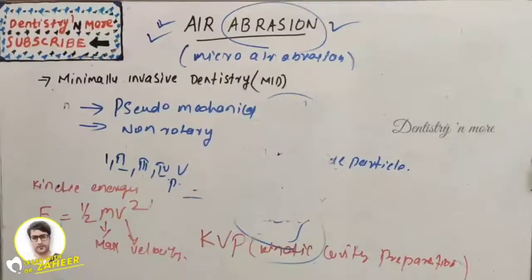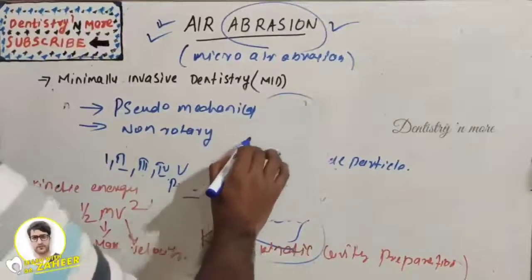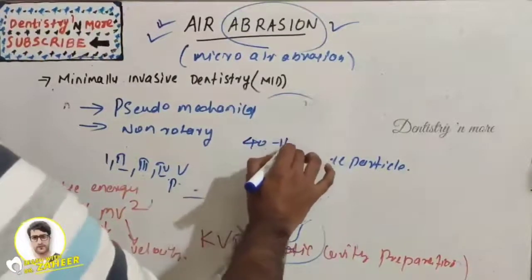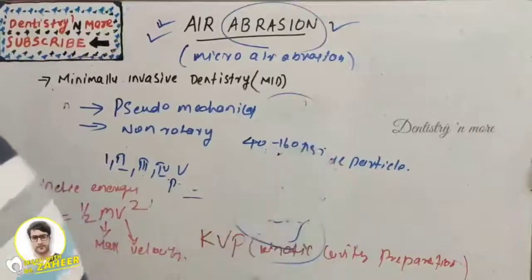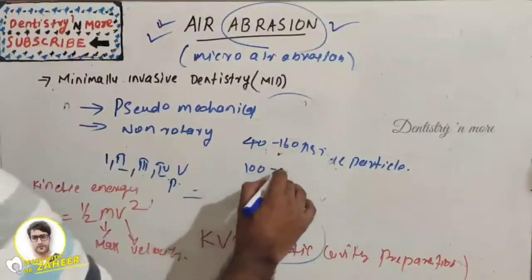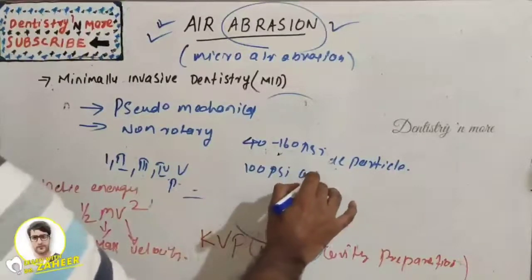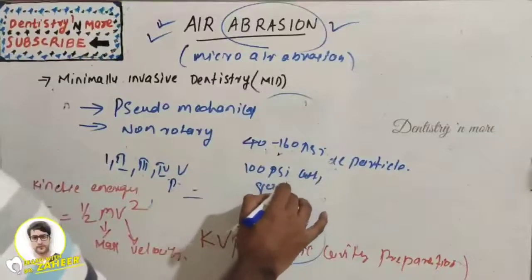Regarding the pressure, generally it's 40 to 160 psi, and the recommended levels are 100 for cutting and 80 for etching.